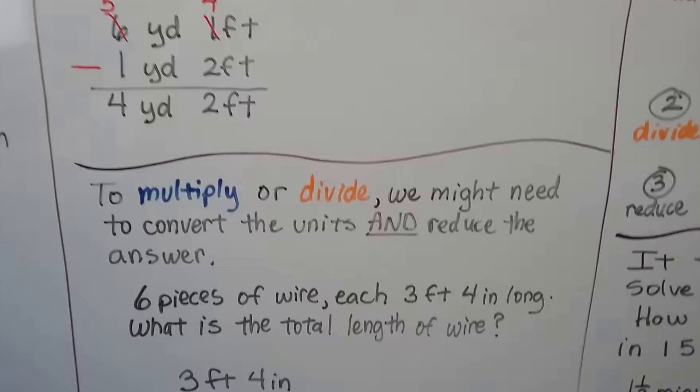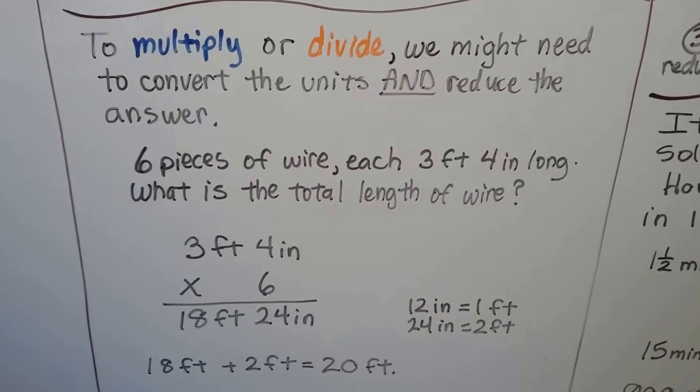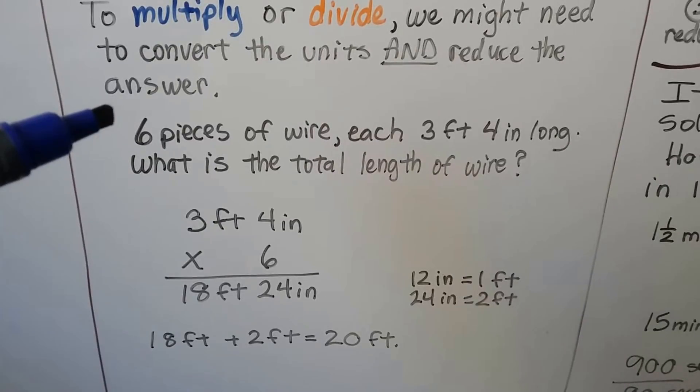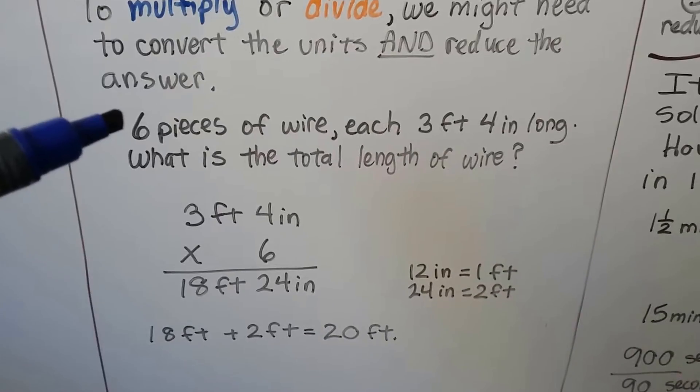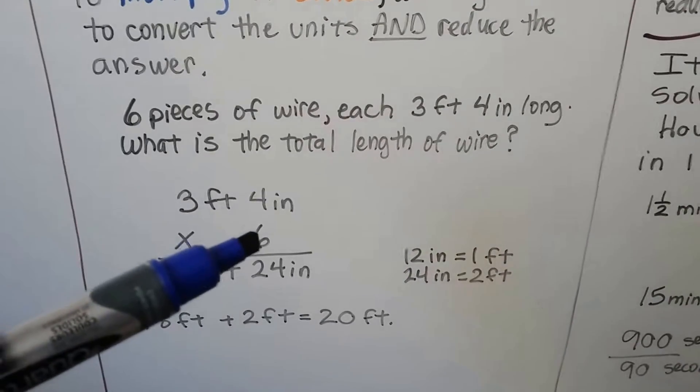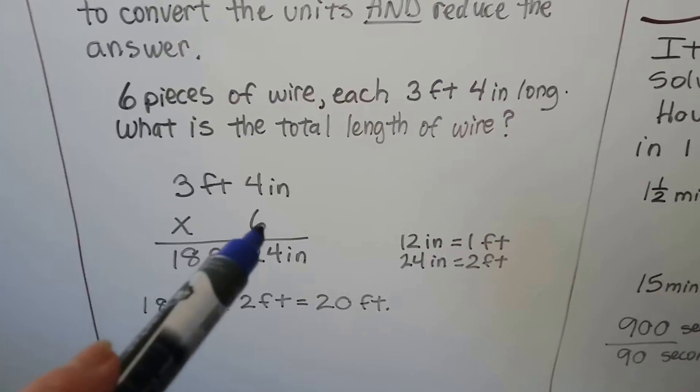To multiply or divide, we might need to convert the units and reduce the answer. If we have 6 pieces of wire that are each 3 feet 4 inches long, what's the total length of wire? So we need to do 3 feet 4 inches times 6 because there's 6 pieces.